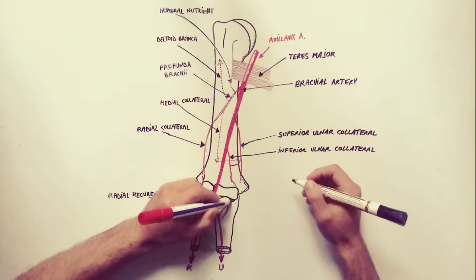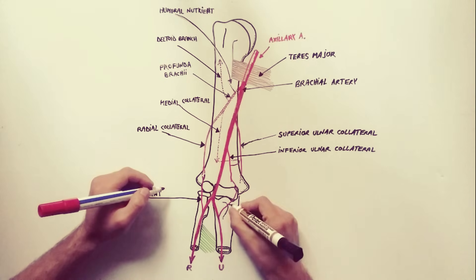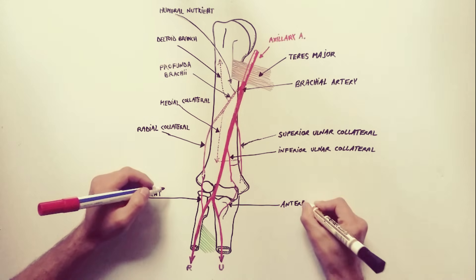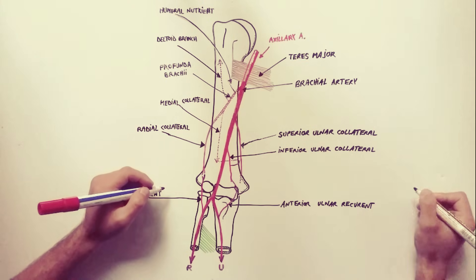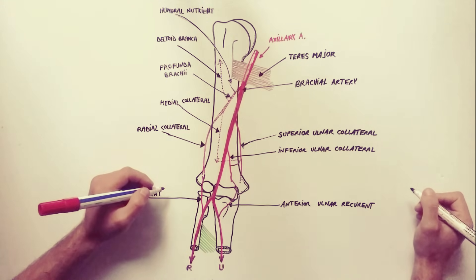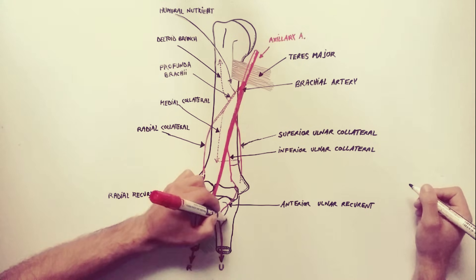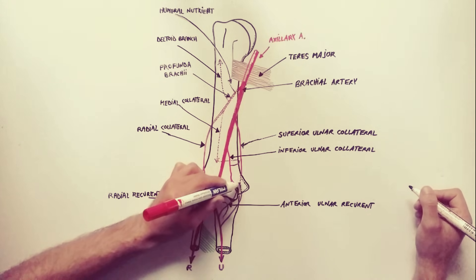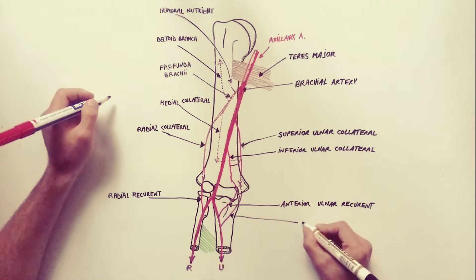From the ulnar artery we have the following three branches. The anterior ulnar recurrent artery will anastomose with the inferior ulnar collateral in front of the medial epicondyle. The posterior ulnar recurrent artery will anastomose with the superior ulnar collateral behind the medial epicondyle.